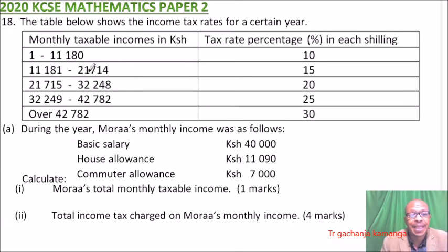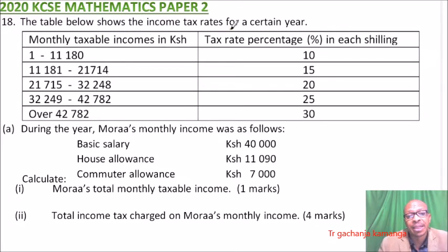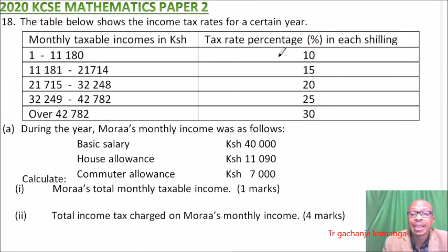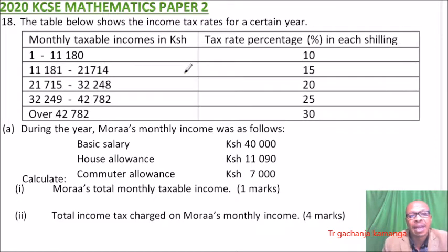This is question number 18. We are told the table below shows the income tax rate for a certain year. Monthly taxable income in Kenyan shillings and tax rate percentage in each shilling. The first bracket is 1 to 11,180 charged at 10 percent, and 11,181 to 21,714 is taxed at 15 percent.